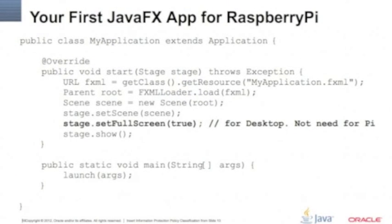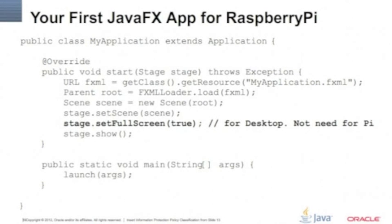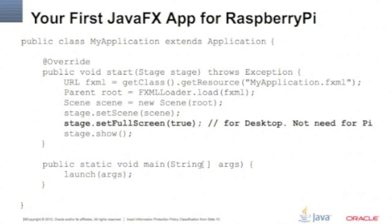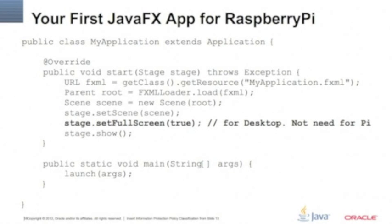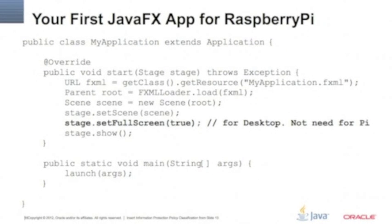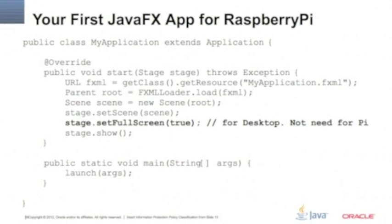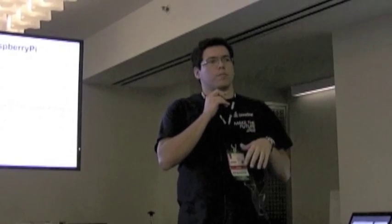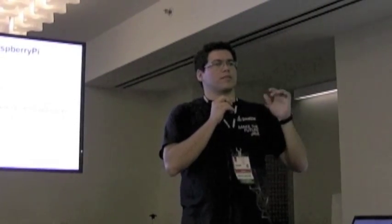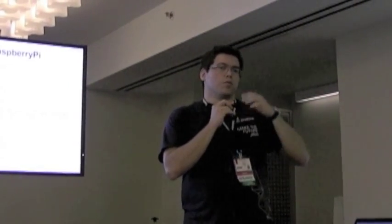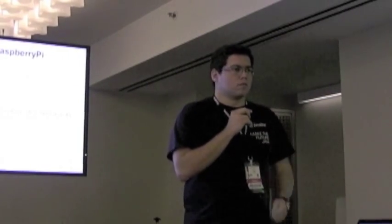The code looks like this — it extends the application with a start method and a stage object that loads the FXML file. If you want to have an idea how it's going to work on Raspberry Pi, you can just add the set full screen call for your desktop or laptop. This will launch your application in full screen mode on your laptop; just press Escape and it will bring you a regular window, not full screen.